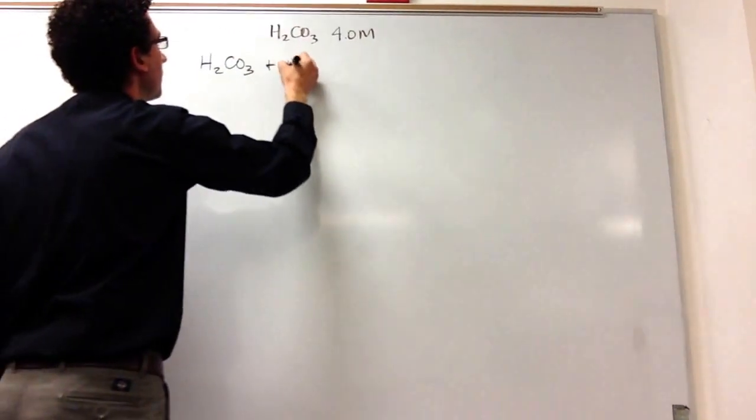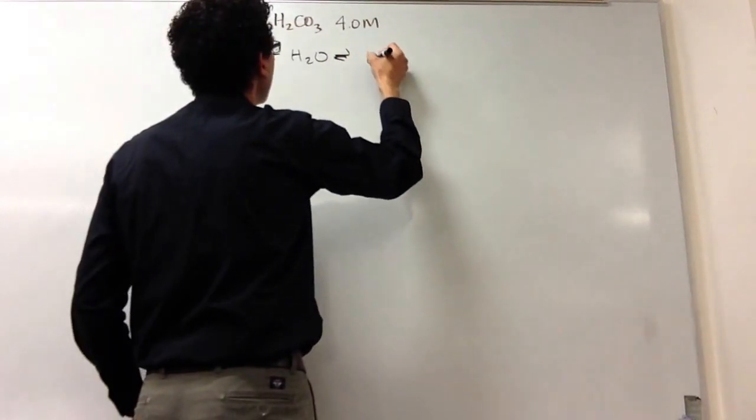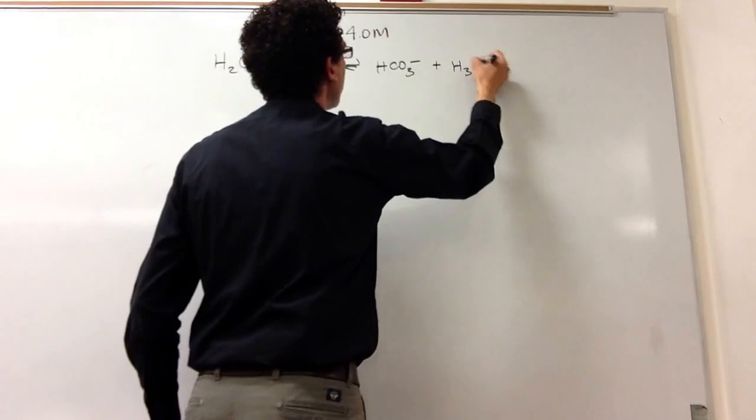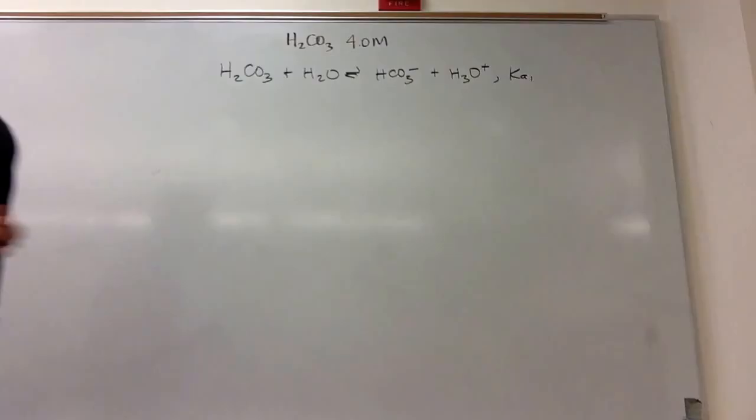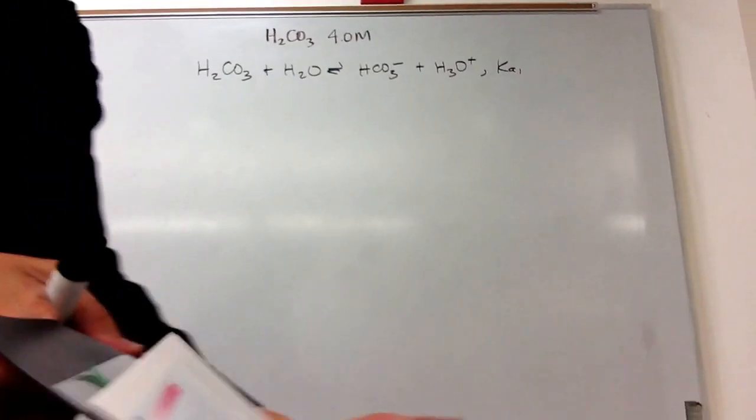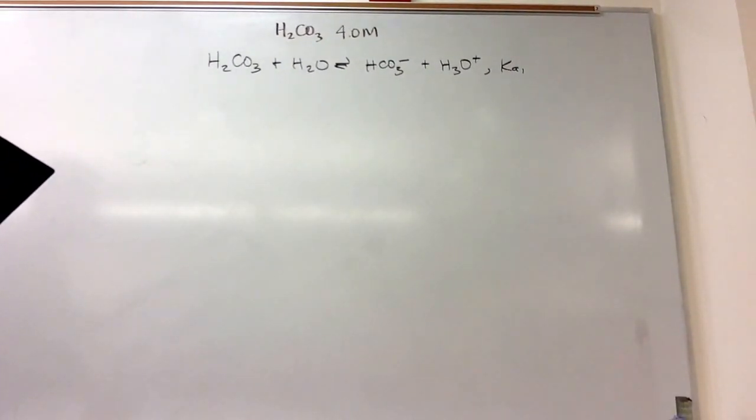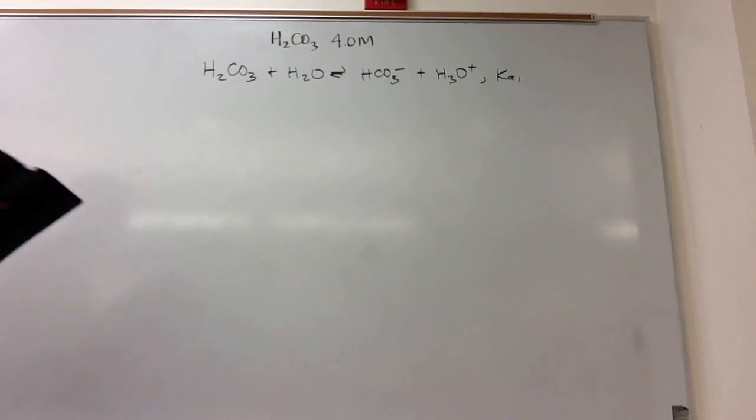H2CO3 plus H2O, this is a general equation for an acid, goes to HCO3 minus plus H3O plus, and this would have some Ka1 associated with it, and from Wikipedia, your textbook, etc., this is 4.4 times 10 to the minus 7.